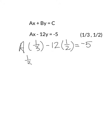So now I have 1/3 A. 12 times 1/2 is 6, equals negative 5. So now I have a two-step equation to solve. And to solve I do the opposite. At first I add or subtract. So the opposite of subtracting 6 is to add 6 to both sides. So 1/3 A equals negative 5 plus 6 is 1.